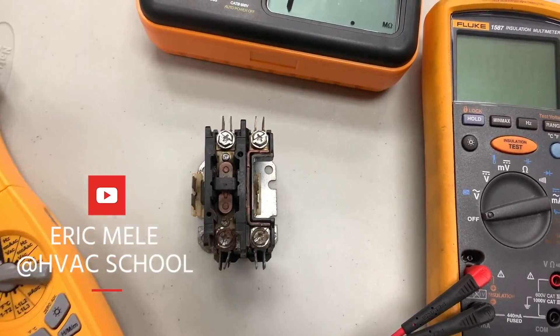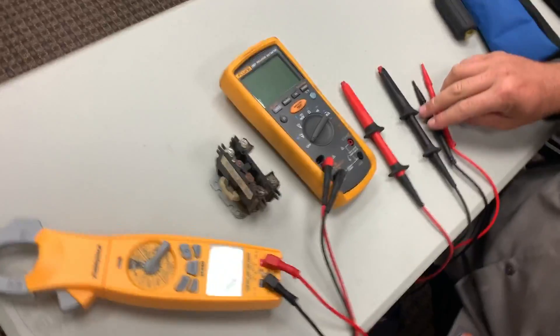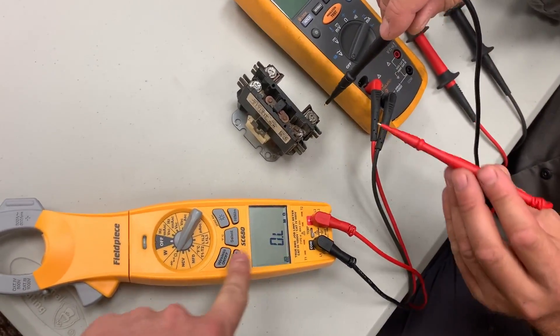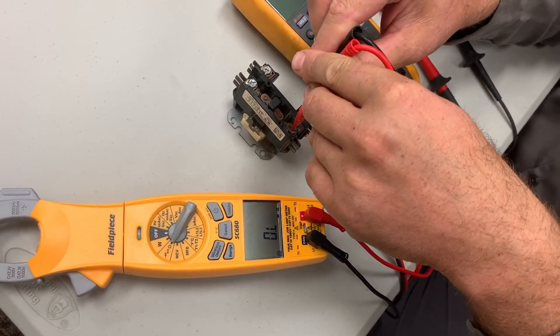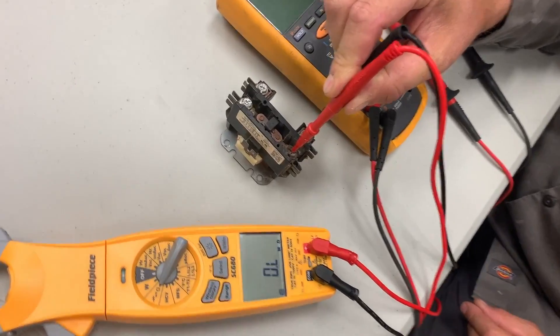Eric is going to demonstrate. We're going to start with the Field Piece meter and leave it in megaohm scale. We've got the screws a little bit backed out because that's how it was when we uninstalled it. So when we first checked it, we were like, no, it's not shorted.